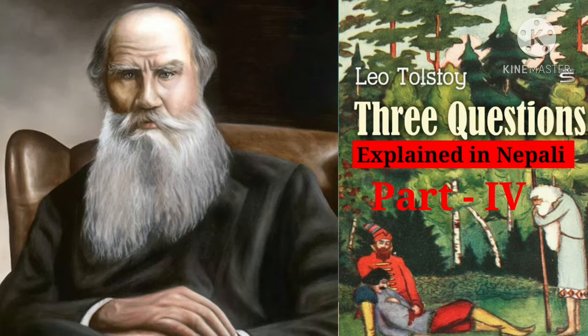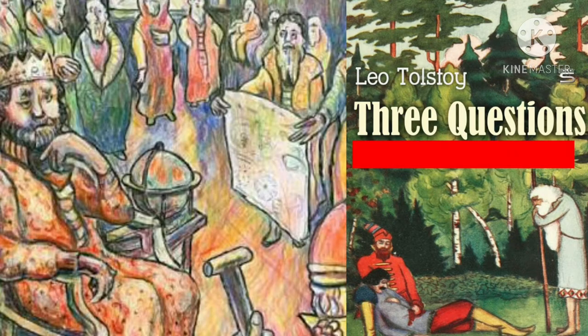In the story so far we've come across three important characters. At the very outset we come across the Tsar, who is in search of answers to his three questions, as the title suggests.